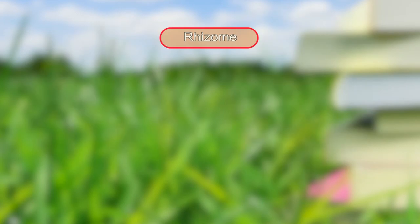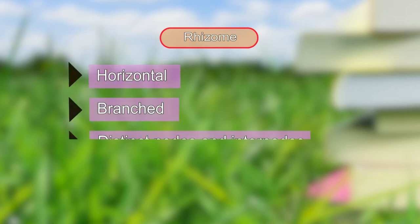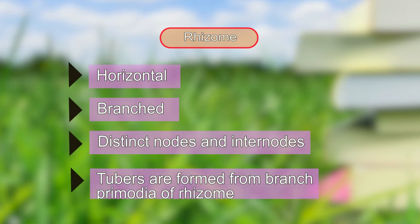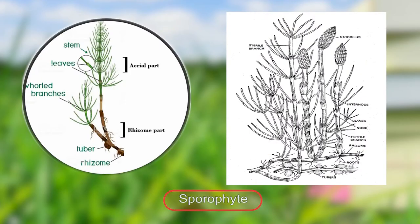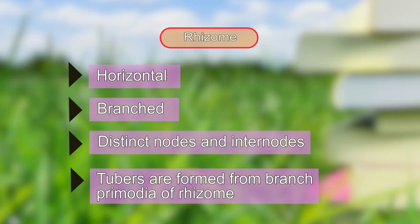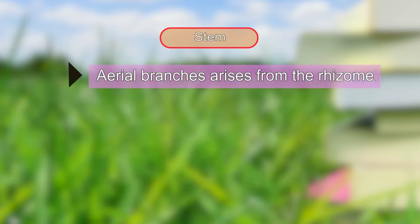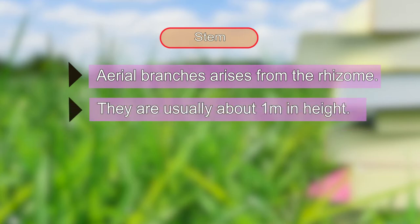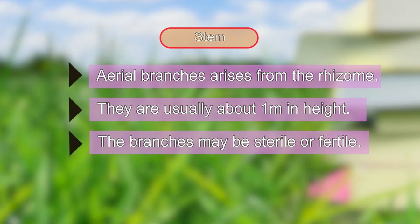We will begin with the rhizome. The rhizome present is horizontal and branched, and prominent nodes and internodes are also present. Sometimes tubers are also formed. The stem arises from the rhizome and is about 1 meter in height. The branches can be sterile or fertile.